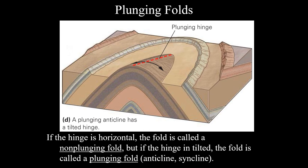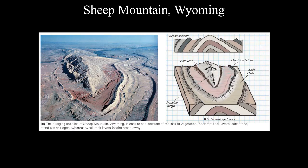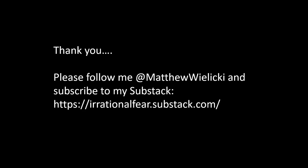Most folds, domes, and basins are not parallel with the surface — they have some angle to them. When a fold has an angle, we call it a plunging fold: the hinge line is actually tilted, so the fold disappears below the surface of the earth. Here's an example from Sheep Mountain in Wyoming — a nice anticline where the oldest rocks are in the middle, progressively younger rocks go outward, and the fold plunges down into the earth along its southern edge.